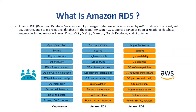Amazon RDS is a fully managed service provided by AWS. It allows us to easily set up, operate, and scale a relational database in the cloud. RDS supports a wide range of popular database engines like MySQL, MariaDB, Oracle, SQL Server, PostgreSQL, and Amazon Aurora.